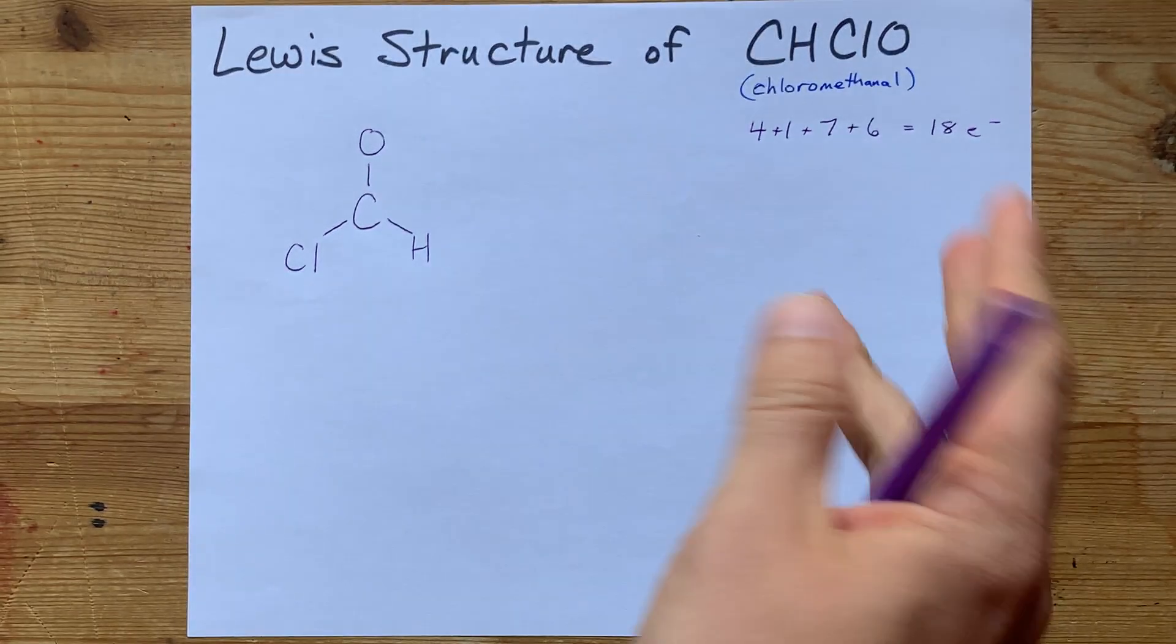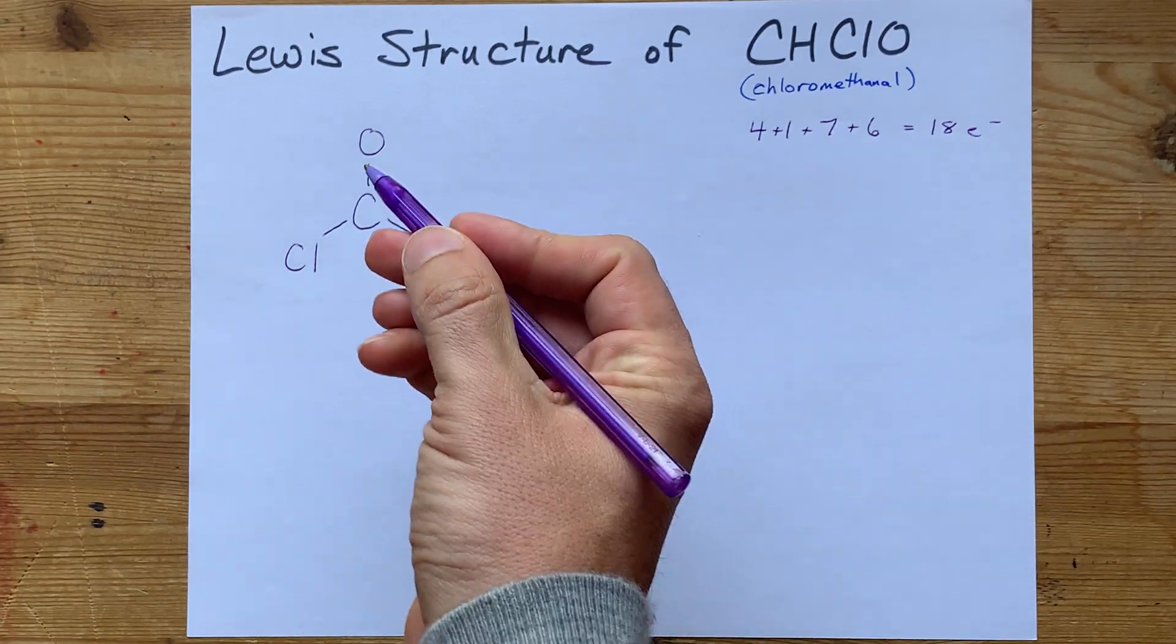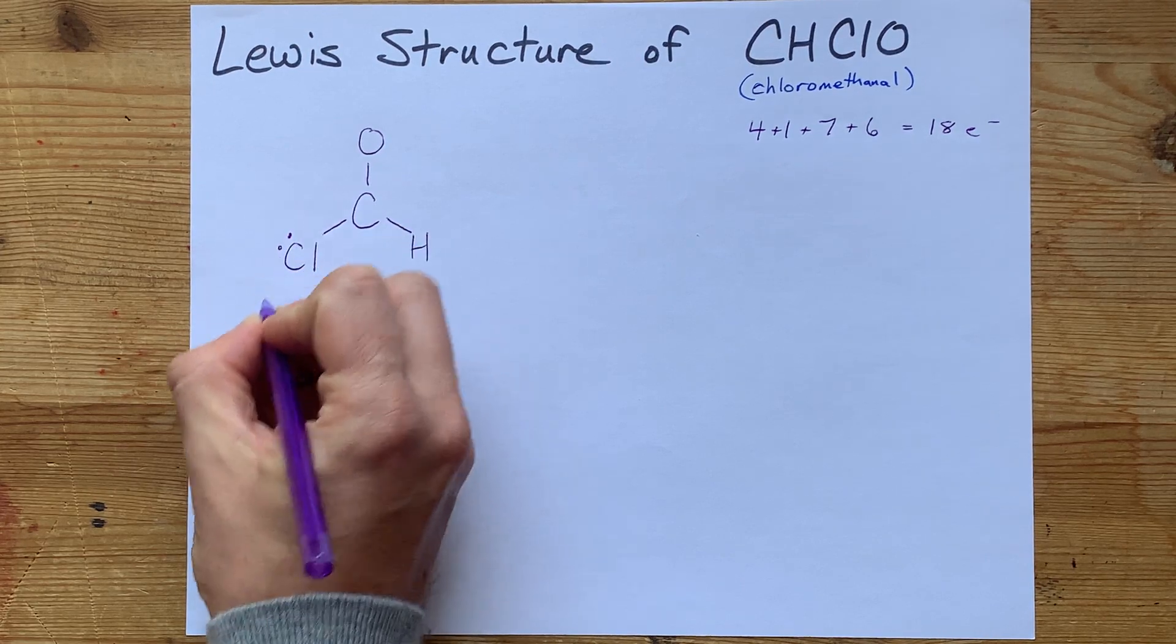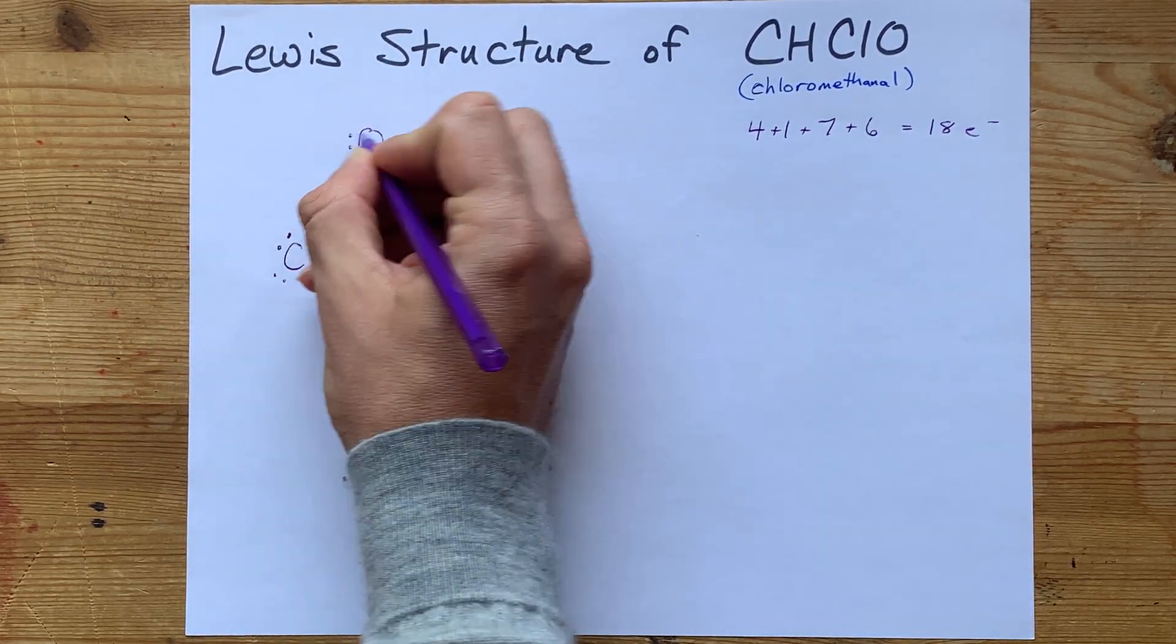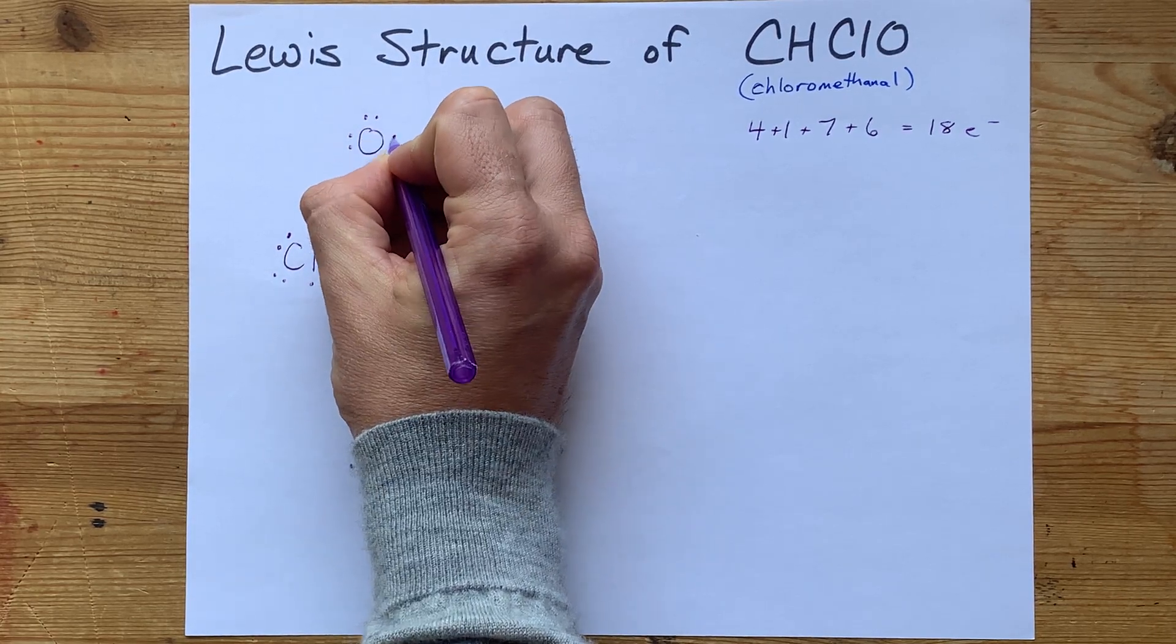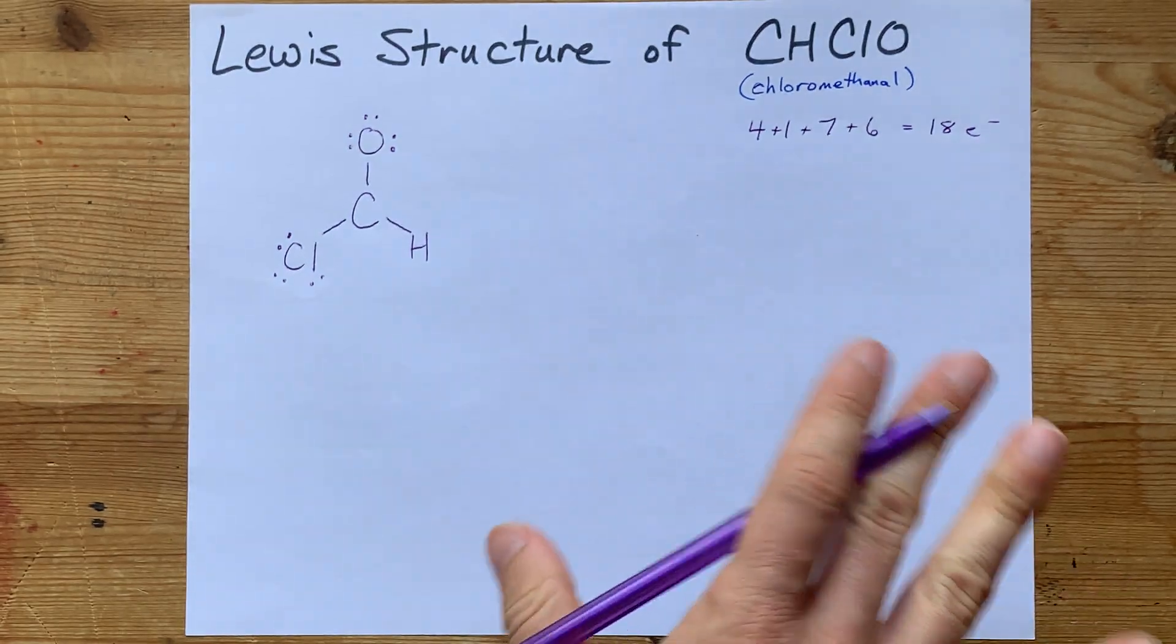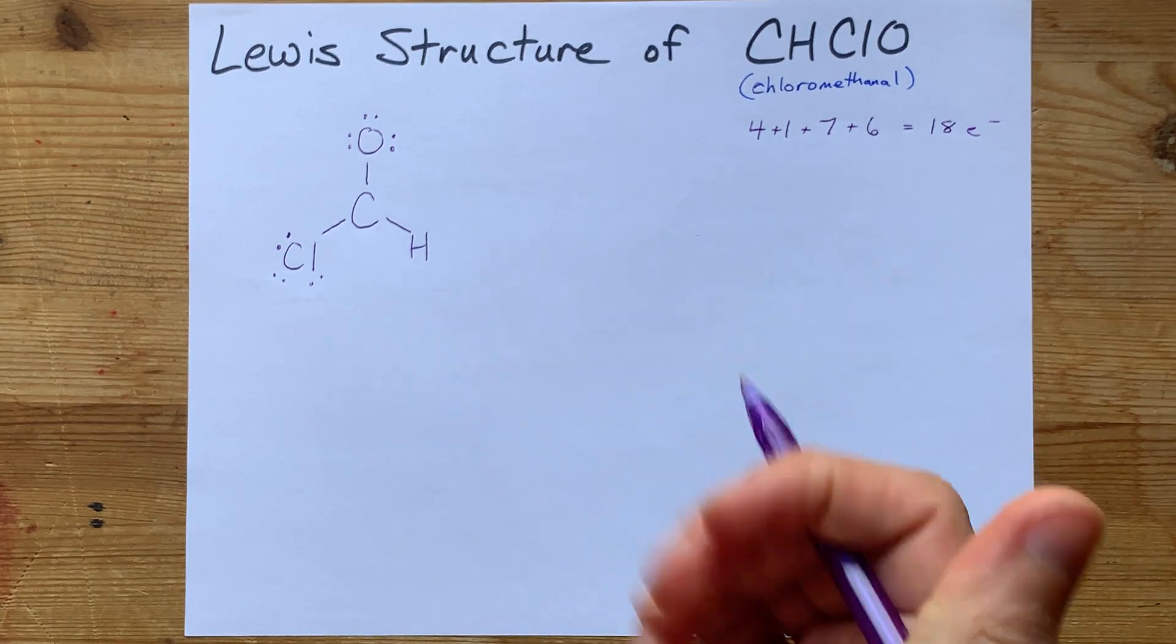Then, I like filling the octets on the outer atoms. So I have 2, 4, 6 electrons, and I need 18 total. So let's go 7, 8, 9, 10, 11, 12, 13, 14, 15, 16, 17, 18. Okay, I'm out of electrons. I can only use 18 because there's only 18 valence electrons among these atoms total.